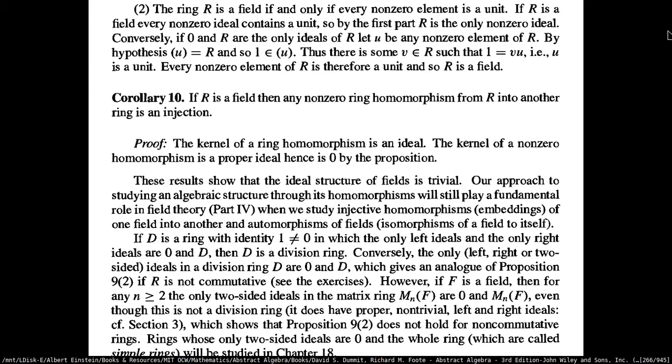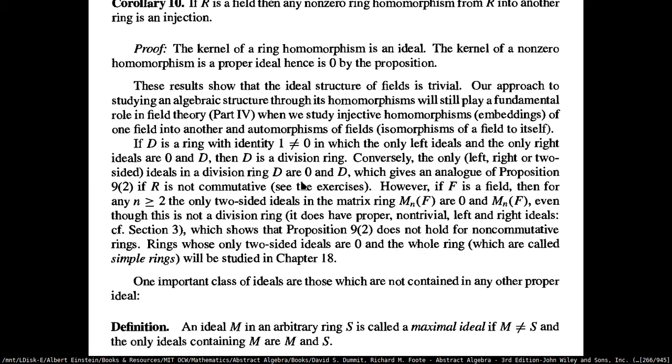If R is a field, a ring homomorphism from R into another ring is going to be an injection. So injective homomorphisms are actually embeddings of one field into another. You have automorphisms of a field to itself — they would be mostly isomorphisms. This is important because fields will be important when we do modules and vector spaces. Vector spaces are going to depend a lot on fields. When you construct the dual space of a vector space, you'll have these endomorphisms which are pretty much just isomorphisms of a field onto itself.